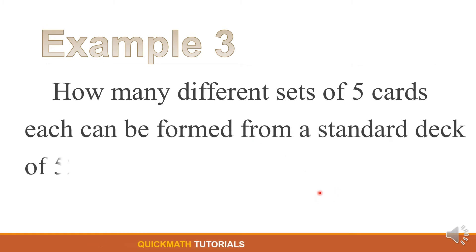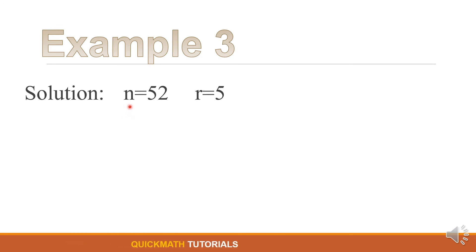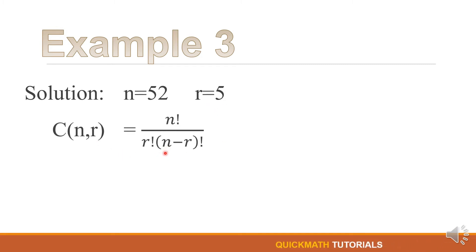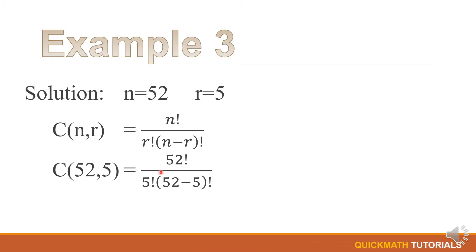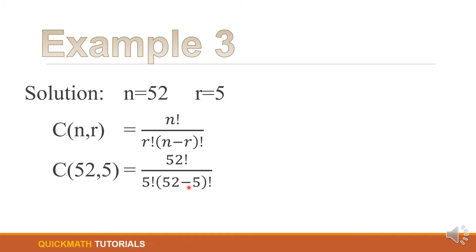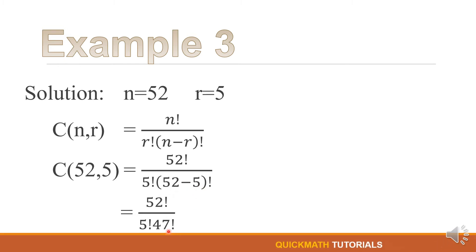For our third example: How many different sets of 5 cards each can be formed from a standard deck of 52 cards? For our solution, n is equal to 52 and r is equal to 5. Using the formula, we have the combination of 52 objects taken 5 at a time: 52 factorial over 5 factorial times (52 minus 5), which simplifies to 52 factorial over 5 factorial times 47 factorial.